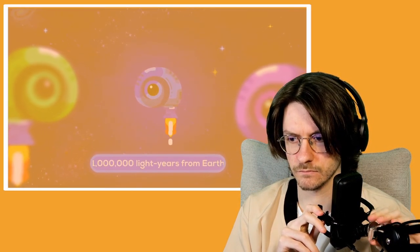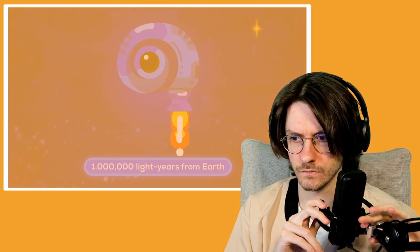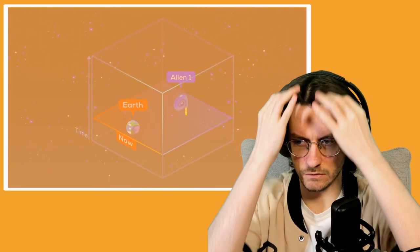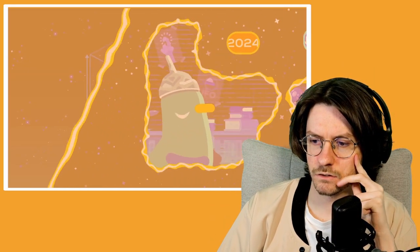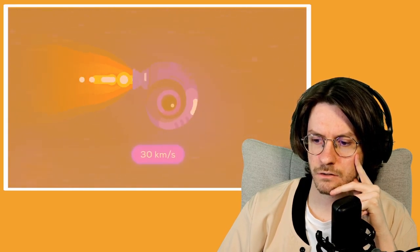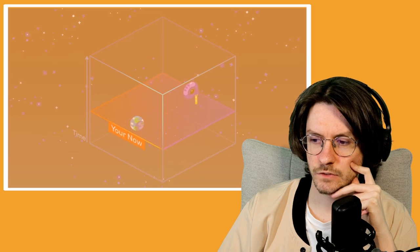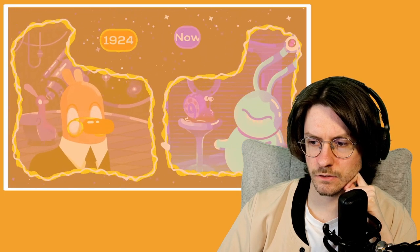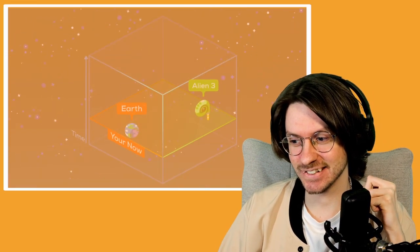Imagine three alien spaceships a million light years away. The first one just hovers in space, not moving relative to you. You both experience the same now, the same present. If you had a magical, instantaneous internet connection, you could do a video call right now and chat about alien things. The second spaceship is flying away from us at 30 kilometers a second, about three times faster than a human rocket. It's moving differently through the block of time than you are, which means its now is different from yours. With the magical internet, the aliens can talk to your ancestors in 1924, when humanity was discovering the first galaxies outside the Milky Way.